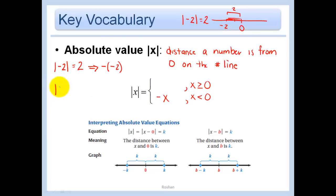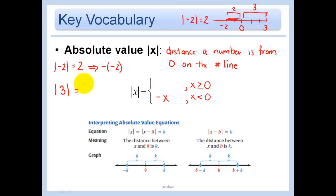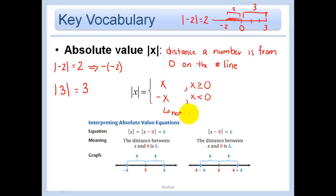What about the absolute value of 3? How far is 3 from 0 on the number line? It's exactly the same as its value, 3 — it is 3 units away. So the absolute value of x is just itself, not the opposite of itself. Don't be confused: negative x does not denote a negative number. x is negative when the answer is negative x, so negative x ends up being a positive number. Don't mix that up.